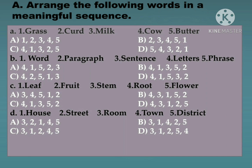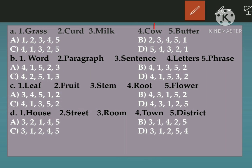Part A words are: Grass, Curd, Milk, Cow, Butter. You have to arrange them in a sequence. We know that cow eats grass, and then gives milk. With that milk we can make curd, and with the curd we can make butter.